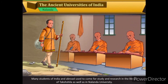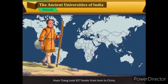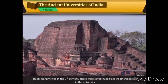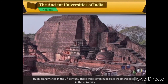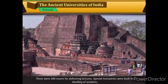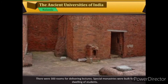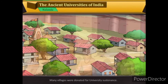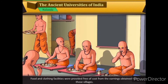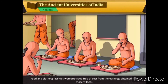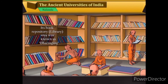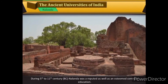Many students from India and abroad came for study and research in the libraries of Takshashila and Nalanda. Xuanzang took 657 books from here to China. In the seventh century, there were seven huge halls and 300 rooms for delivering lectures; special monasteries were built for students' dwelling. Many villages were donated for university sustenance, and food and clothing were provided free of cost. Its library was known as Dharmaganja.